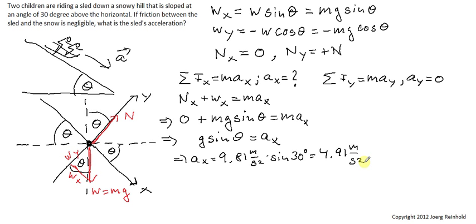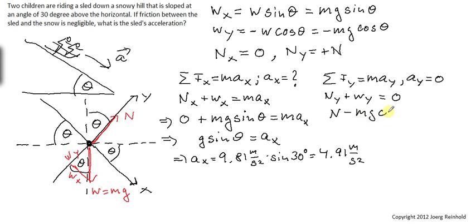We didn't need the y-direction at all to find the acceleration along the slope. But let's briefly evaluate it anyway. In the y-direction, Ny plus Wy equals 0 because Ay equals 0. Ny is just the magnitude of the normal force, and the y-component of weight is minus mg cosine theta. Setting that to 0 allows us to find the normal force, which equals mg cosine theta.